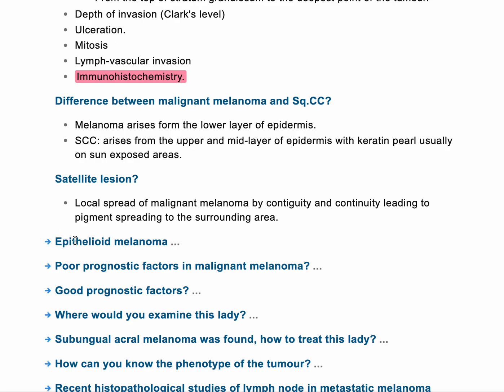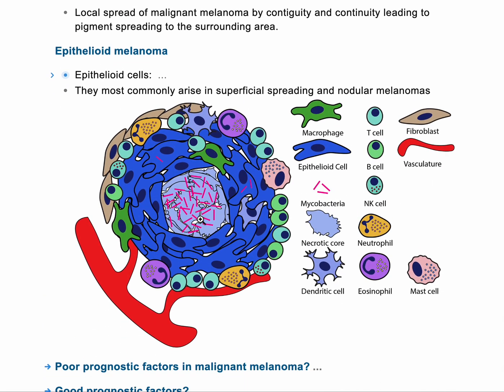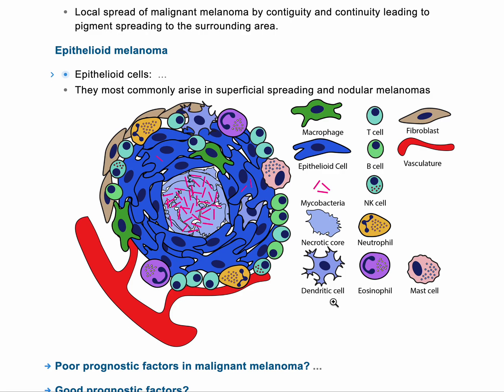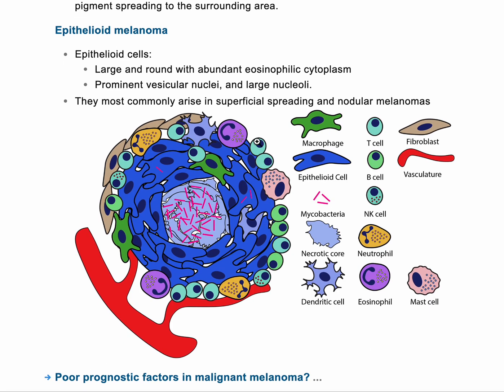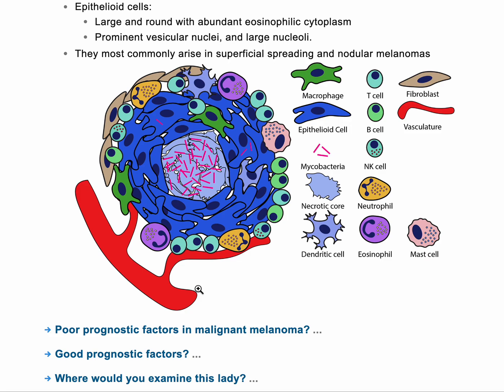Epithelioid cells: these are large cells with a vesicular nucleus on one side, and also highly eosinophilic — they take a lot of the stain. So: large round cells, with eosinophilic cytoplasm, prominent vesicular nucleus, and large nucleoli are present in the epithelioid cell.